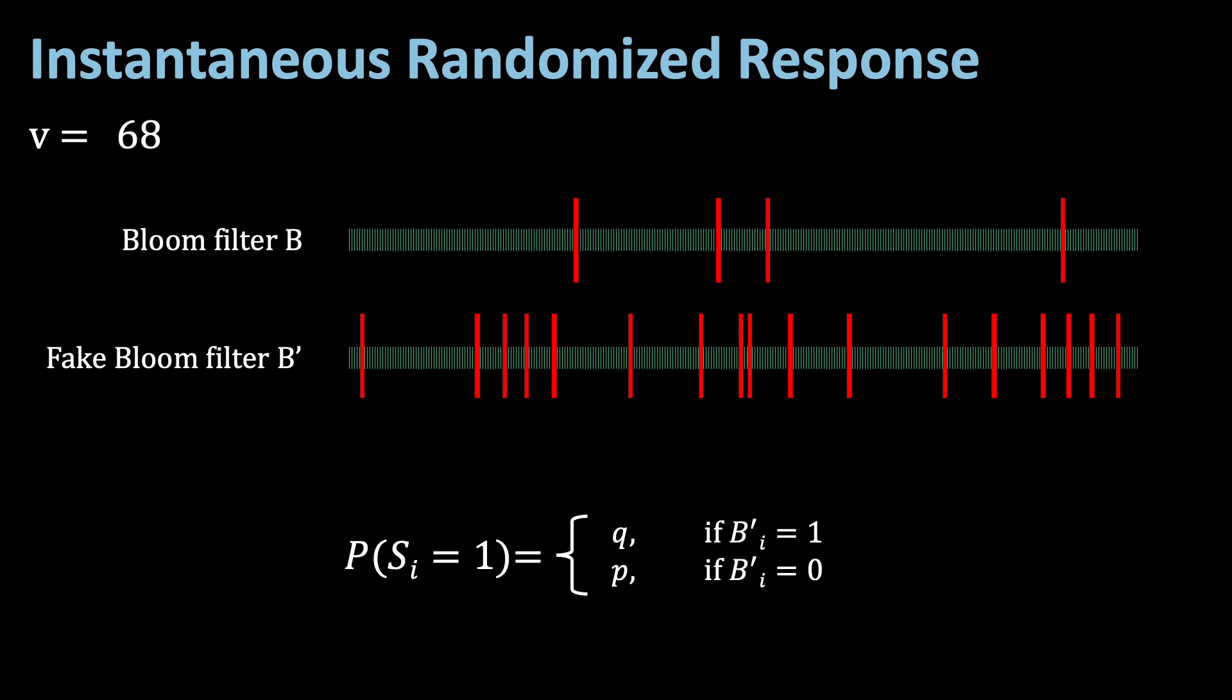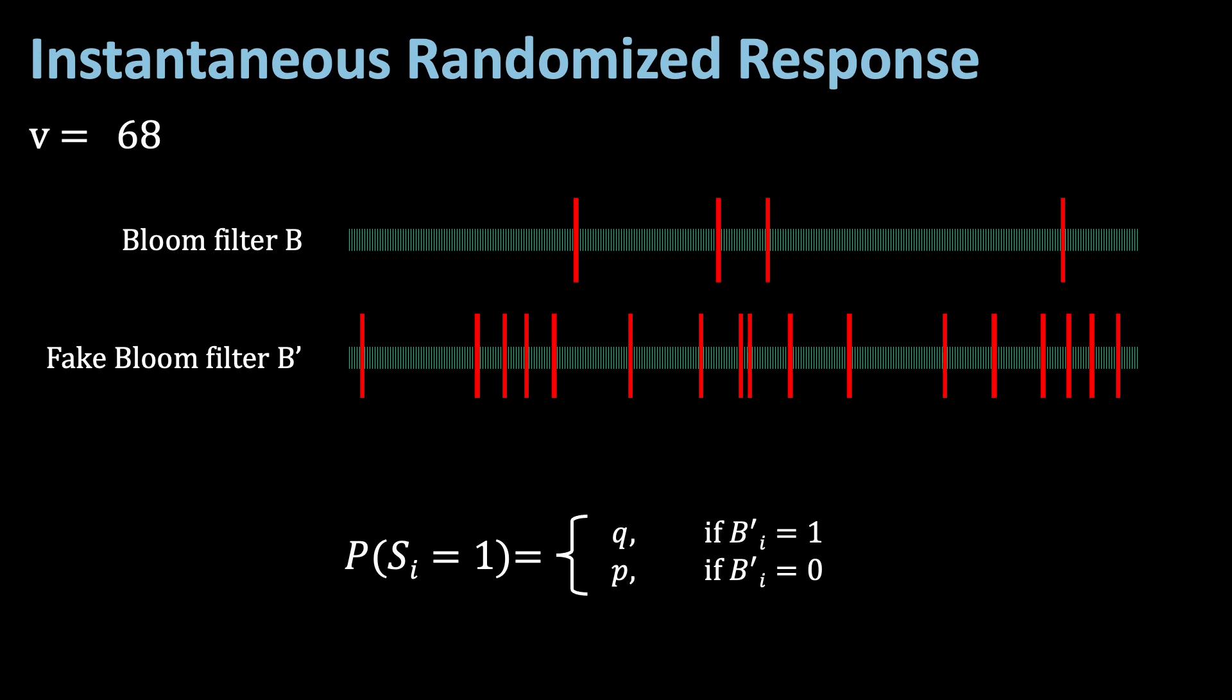If both are 1, then S equals B'. In our example, P equals 0.5 and Q equals 0.75. And the result might look something like that. And this S array is now sent to the server or to the trusted curator.